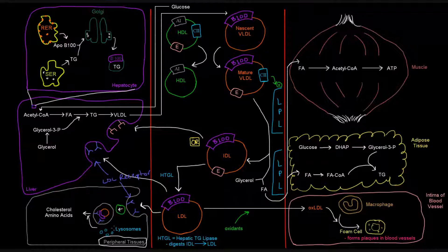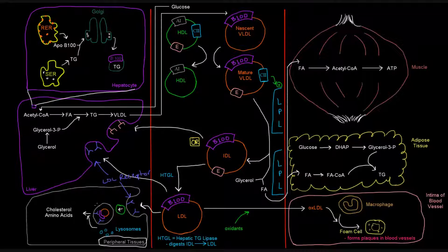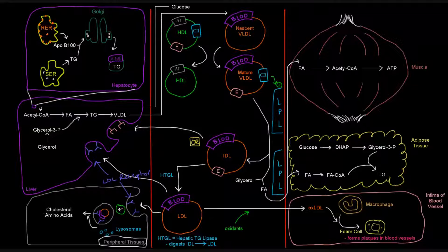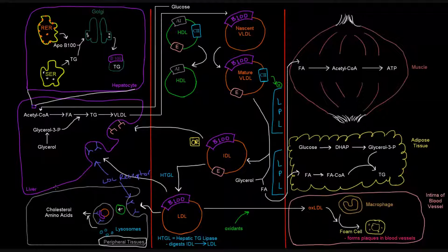And lysosomes can then fuse with these vesicles, and the LDL particle will be basically hydrolyzed and broken down into all its components. And so, we've got cholesterol as well as the proteins involved in that particle that can now be used by that cell or by the cells of those tissues. And so, basically, now these peripheral tissues have cholesterol that they can use. And that's the idea behind LDL.